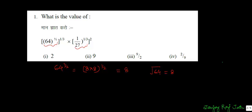Now, this result has to be raised to the power 1/3. We will factorize it: 2 into 2 into 2, and out of this triplet we take 2 as our result. So this entire expression boils down to 2, and let us now solve the other expression.